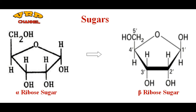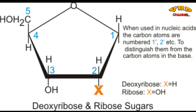On your left there is alpha ribose sugar, which is converted into beta ribose sugar shown on the right. This conversion is accompanied by conformational changes arising due to the rotation of the H and OH bond present at the first carbon position. In the beta conformation, the carbons are named as 1', 2', 3', 4', and 5' for the five respective carbon atoms in beta ribose sugar. The hydroxyl group present at the 2' position may be deoxygenated, leaving a hydrogen atom behind.